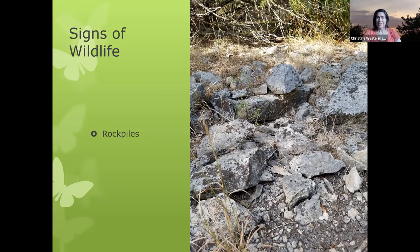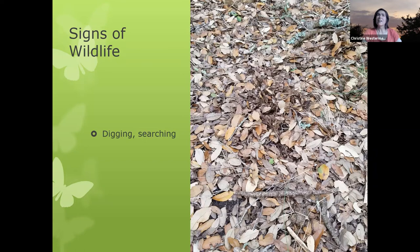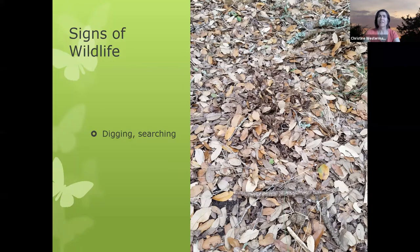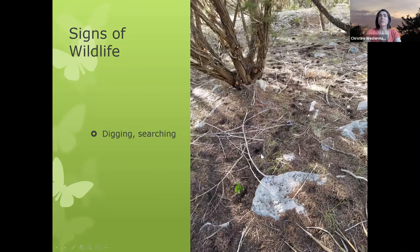Other good places to look for signs of wildlife are rock piles — these provide good places for lizards and snakes to hide. I recently saw a coral snake at my property and, as I was trying to get a photo of it, it was running away from me and slid under a rock pile just like this. You can also see signs of wildlife digging around searching for food — you can see this line in the leaves that I'm almost positive was made by an armadillo going through here, digging with their nose looking for grubs, insects, and underground bulbs.